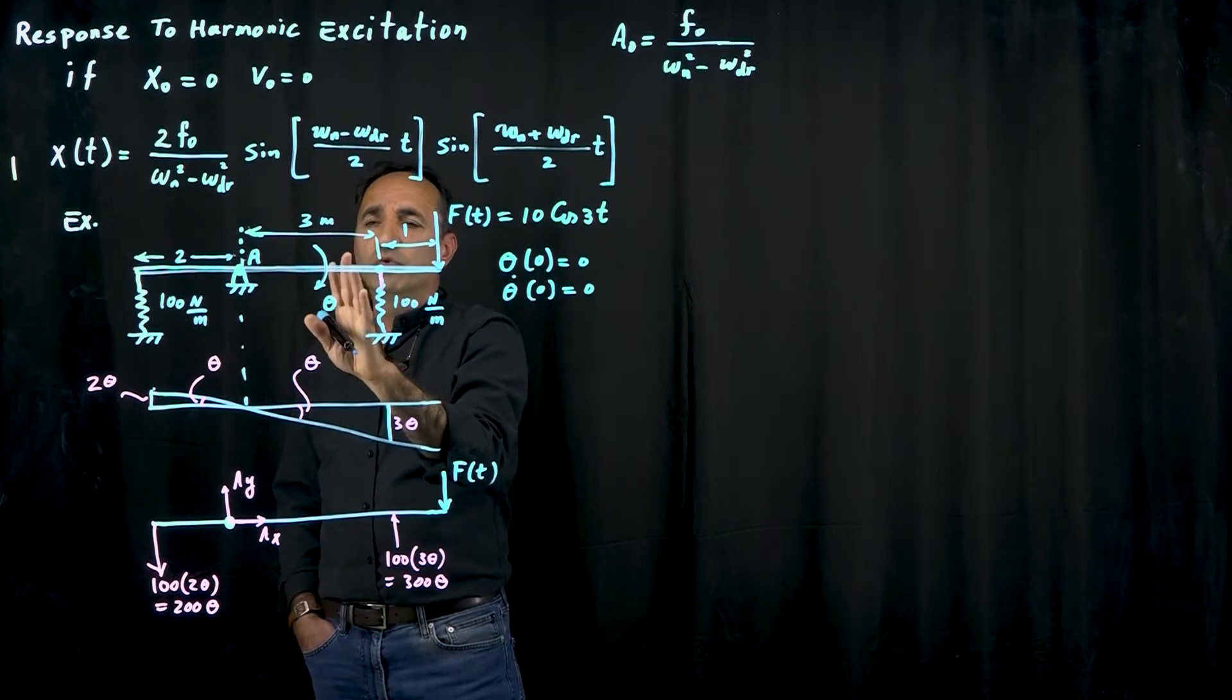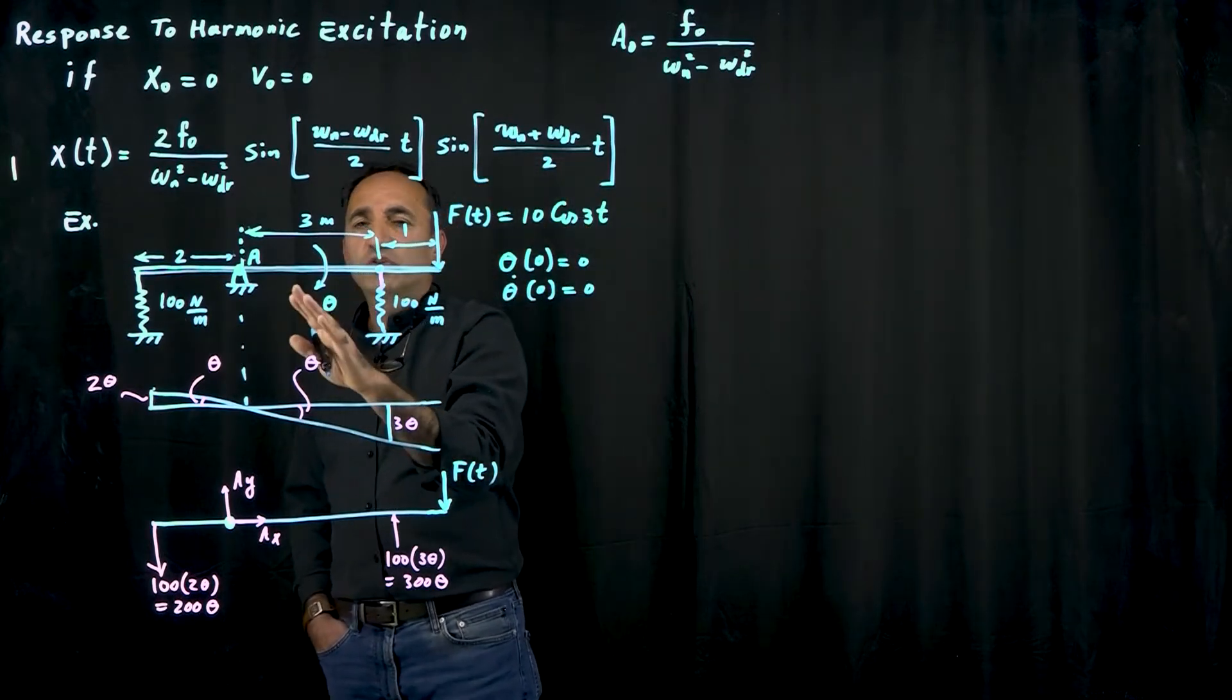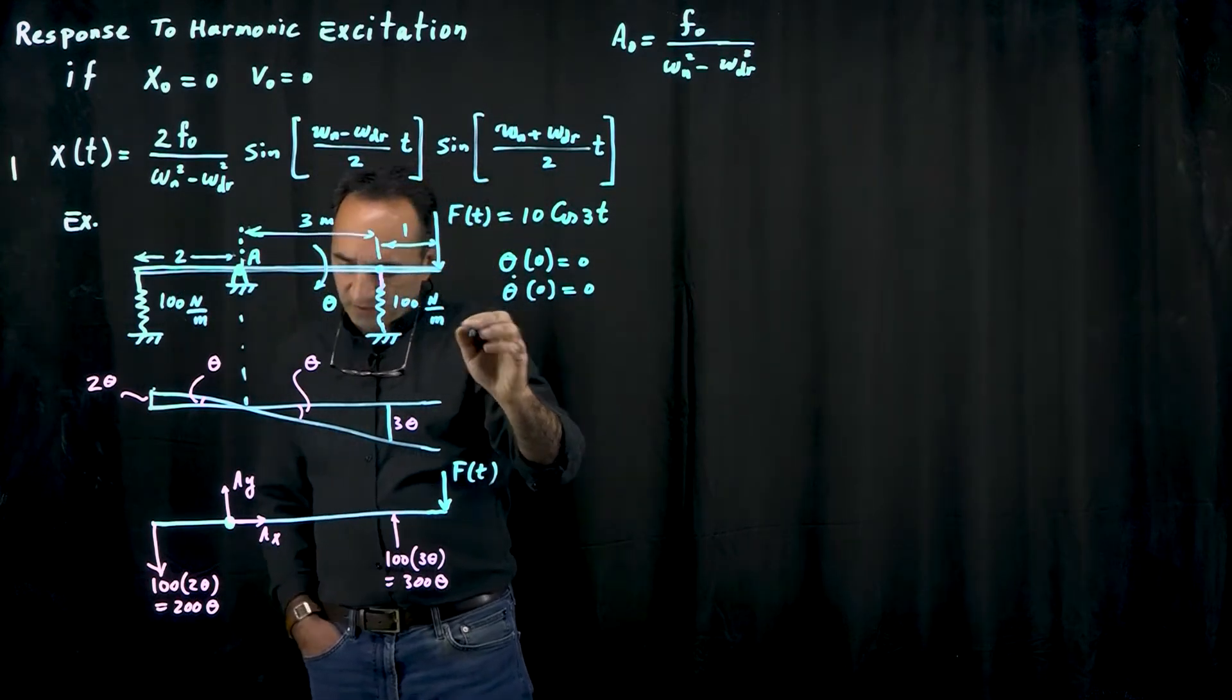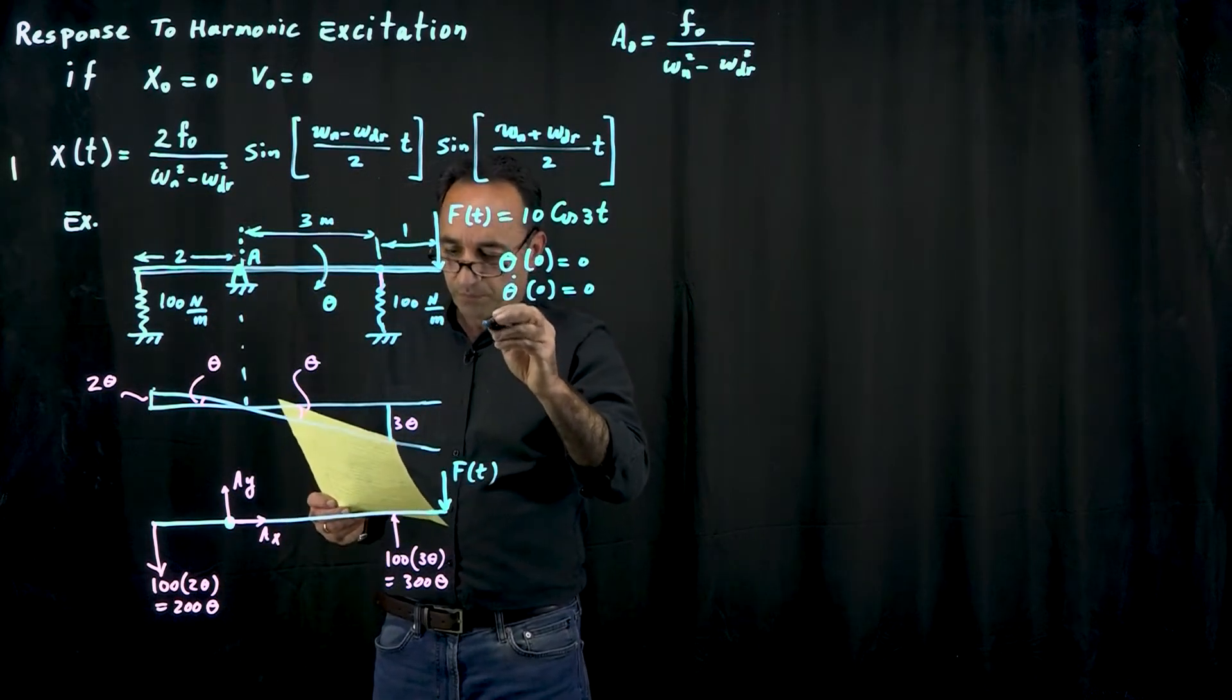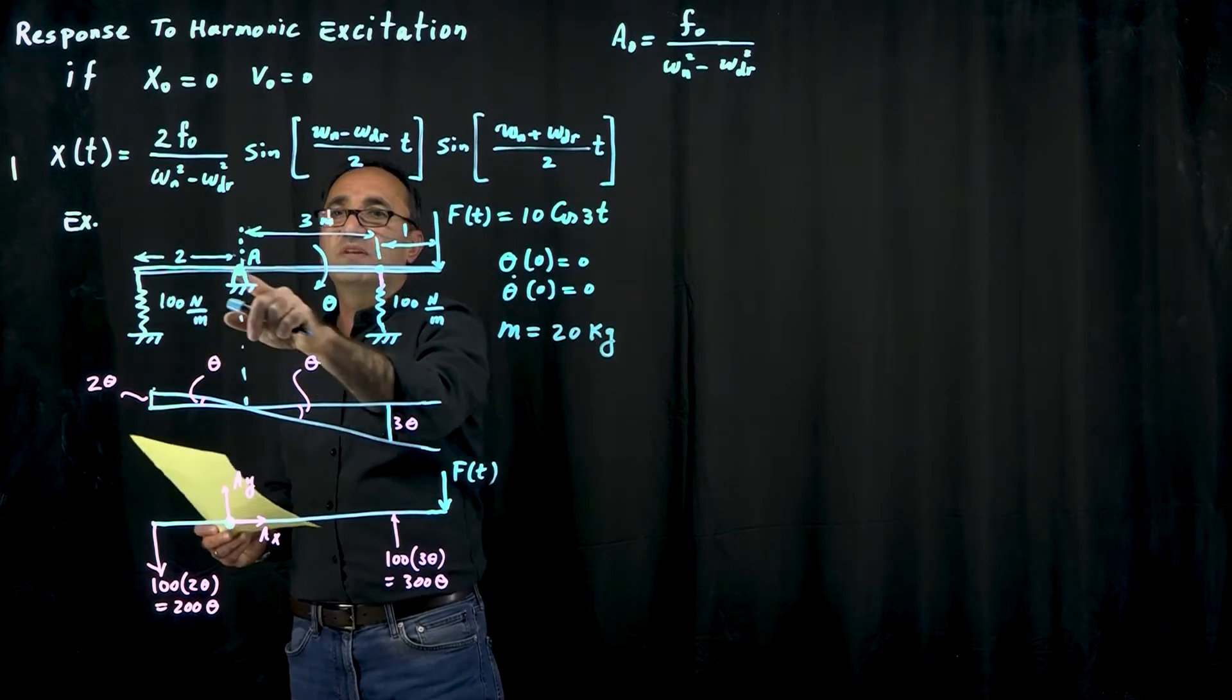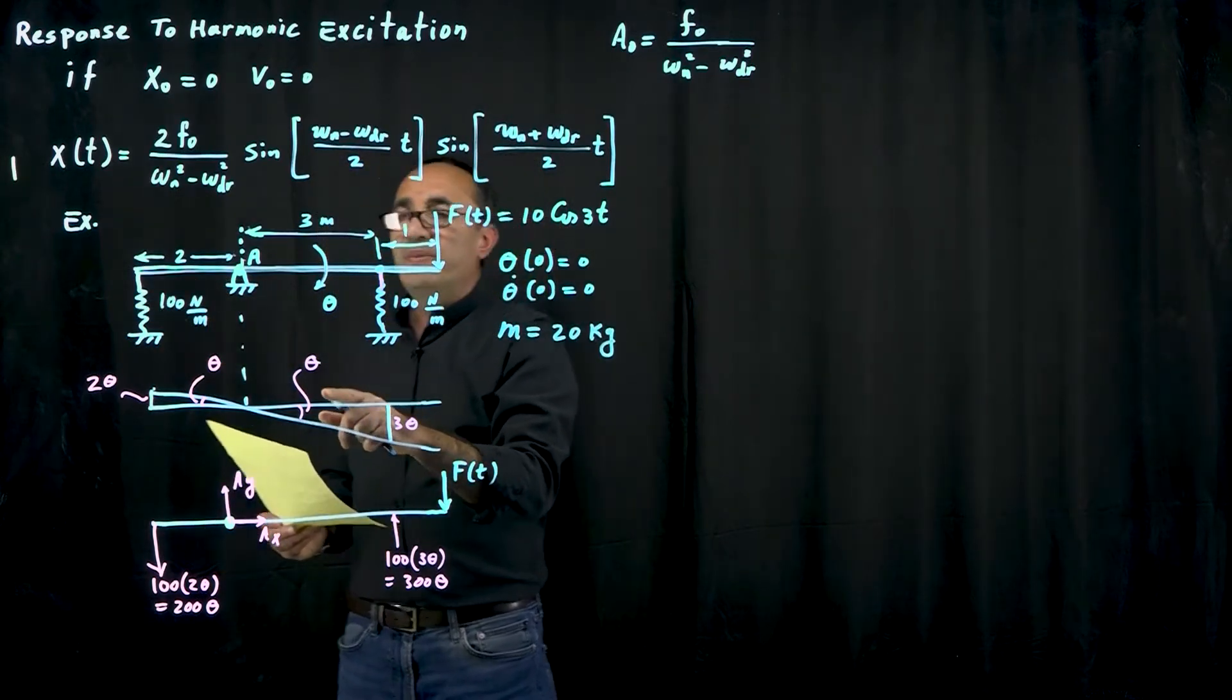The general solution was for a translational system. This is a rotational system and really doesn't matter if you have a translational or rotational system. Basically here we have a system with a rod, a uniform rod whose mass is given to be equal to 20 kilograms. You have two springs here with the same stiffness. This rod is 6 meters long but it's pivoting about point A which is 2 meters from the left side.